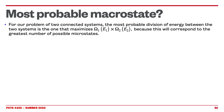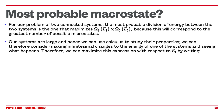Now let's focus on the calculation. The most probable macrostate is the one that maximizes the total number of microstates of the total system. We want to find E1 and E2 such that omega 1 times omega 2 is maximized. Because E1 plus E2 is conserved, we can optimize as a function of E1. Taking the derivative of the product using the chain rule, and noting that because E1 plus E2 is constant, dE1 equals minus dE2, so dE2/dE1 equals minus 1.